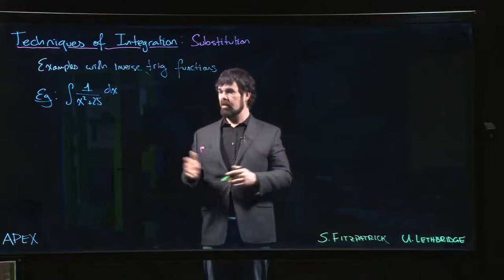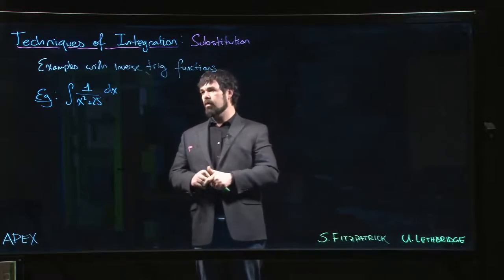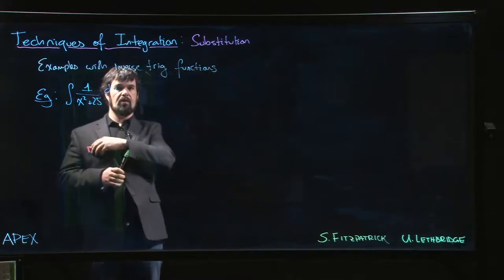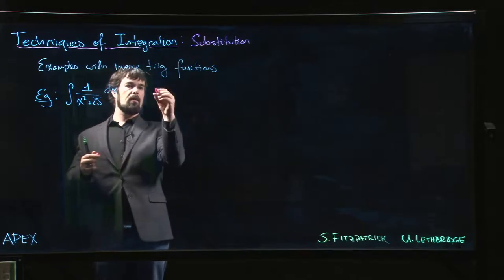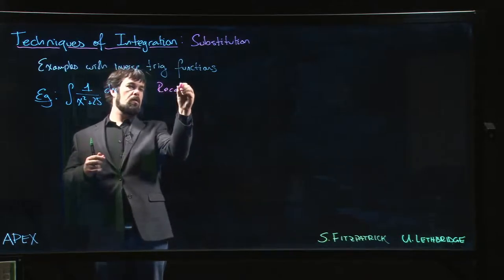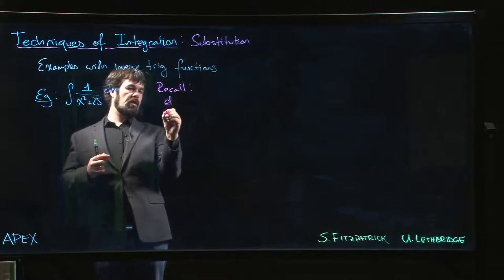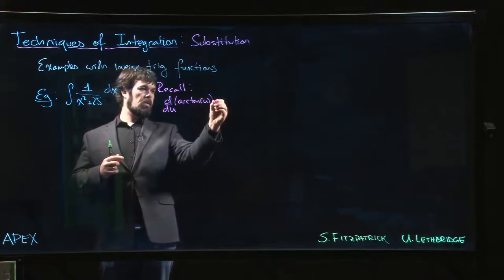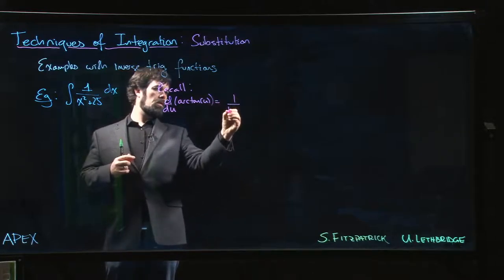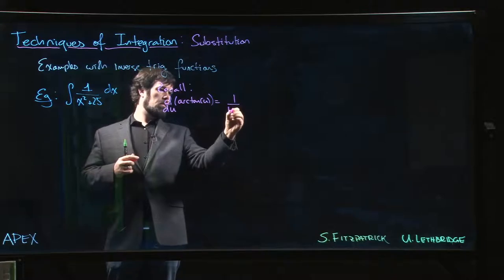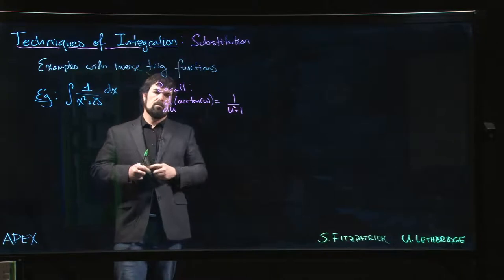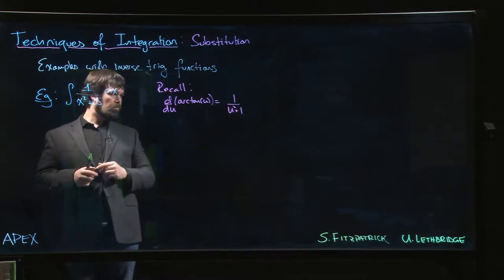For this one here, what we're relying on is the following observation: we remind ourselves that the derivative with respect to u of arctan(u) is 1 over u² + 1.